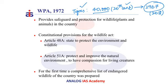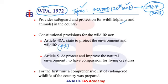This prompted the Government of India in the 1970s to enact a law for the conservation and protection of wildlife, covering both plants and animals. The constitutional provisions for this act include Article 48A, which states that the state has to protect the environment and wildlife — added through the 42nd Constitutional Amendment Act — and Article 51G, which imposes a duty on citizens to protect and improve the natural environment and to have compassion for living creatures.